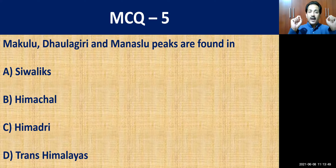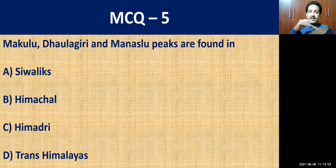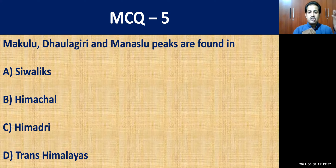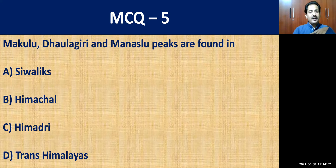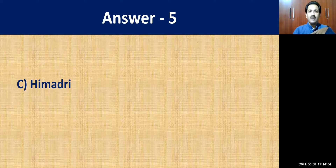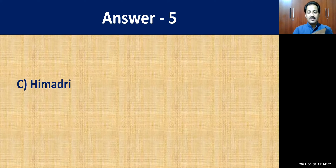MCQ number five: Makalu, Dhavalagiri, and Manaslu peaks are found in — Siwalik, Himachal, Himadri, or Trans-Himalaya? The correct answer is Himadri, that is the greater Himalaya.